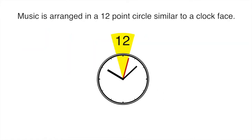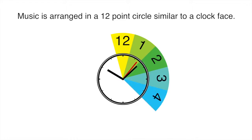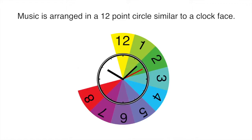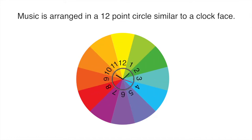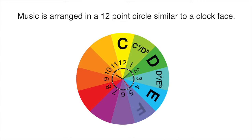Music is arranged in a 12-point circle similar to a clock face. Each of these 12 points is allocated a colour, and each is also allocated a note name.